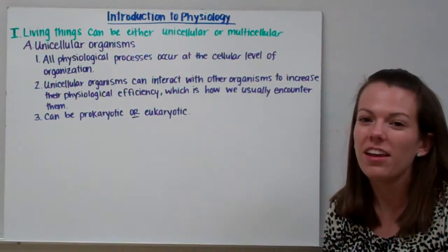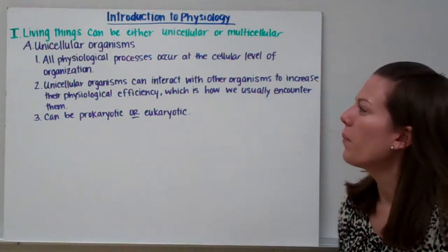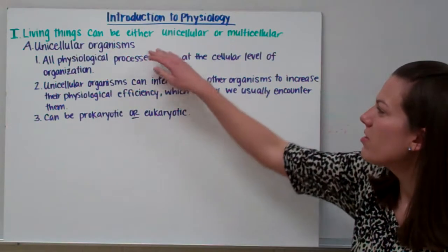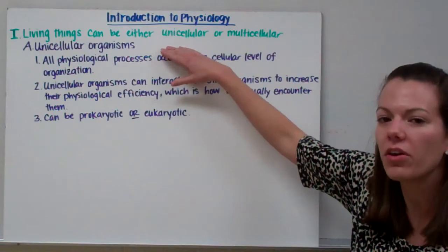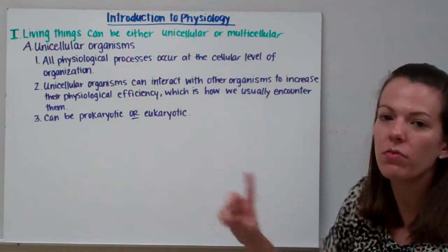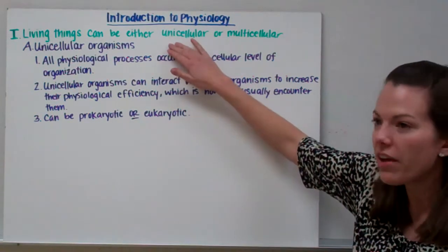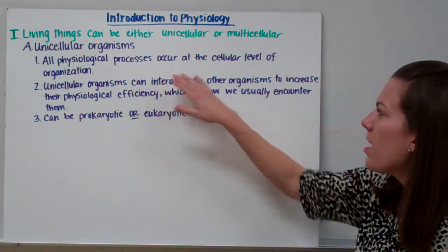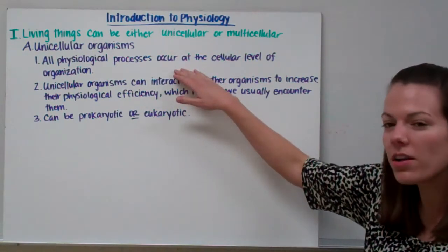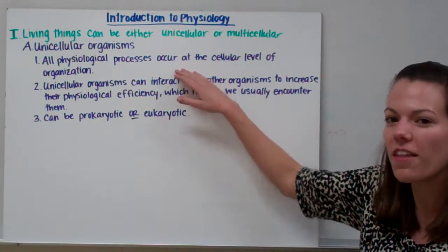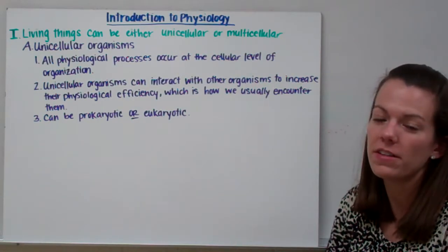This is Kay here with an introduction to physiology part one. Living things can either be unicellular or multicellular — made of one cell or more than one cell. All unicellular organisms are made of one cell, so all their processes must occur at the cellular level of physiology.